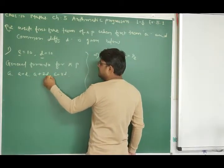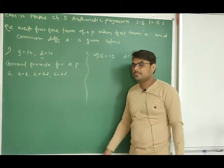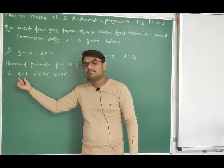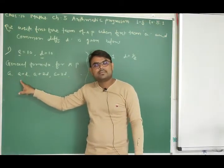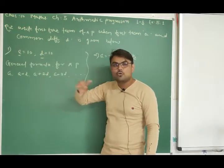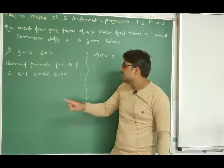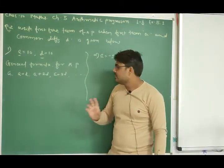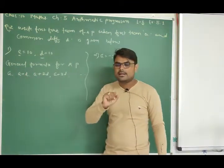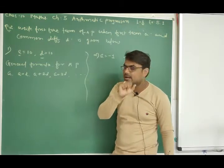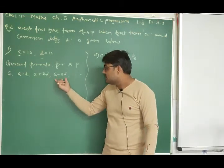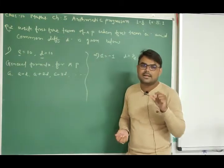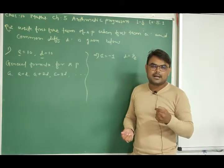The general formula for AP looks like: A, A+D, A+2D, A+3D, and so on. If A is the first term, then the second term is obtained by adding D once. The third term requires adding D twice to A. So the number of times D is added is one less than the term number.